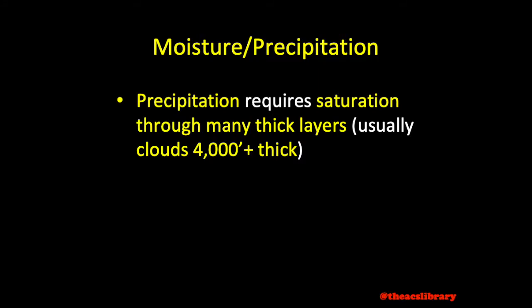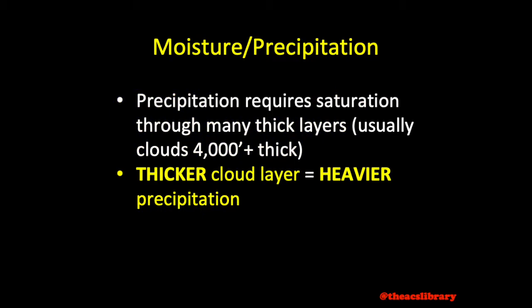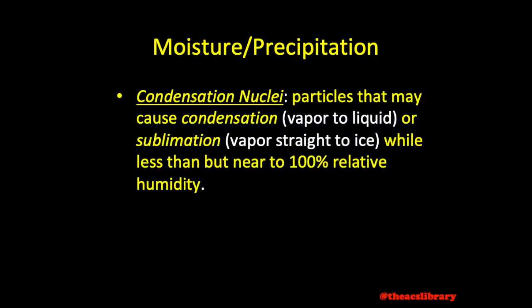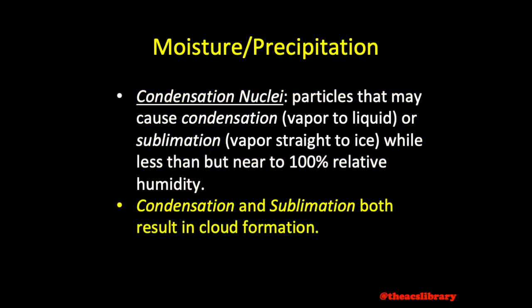Precipitation formation requires saturation through many thick levels, usually clouds at least 4,000 feet thick, and so if there is precipitation in the area one can generally assume that the clouds will be at least 4,000 feet thick in that area. One may also expect that with thicker clouds comes heavier precipitation, or vice versa. Condensation nuclei are particles in the unclean air that may cause condensation, or vapor turning to moisture, or sublimation, defined as vapor turning directly to ice, while at less than but near 100% relative humidity, both resulting in the formation of clouds.